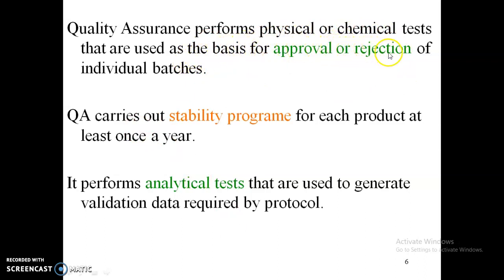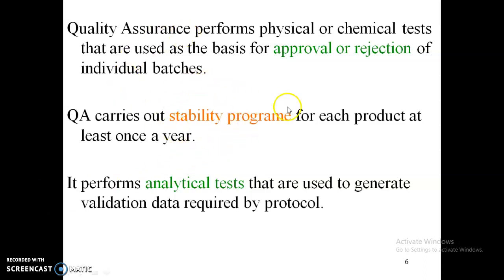QA performs physical or chemical tests used as the basis for approval or rejection of individual batches, where sampling is the main function performed by the QA department. It also carries out a stability program for each product at least once a year, using a stability chamber with four types of zones based on different humidity and temperatures. It also performs analytical tests to generate validation data required by the protocols.